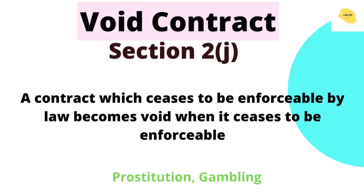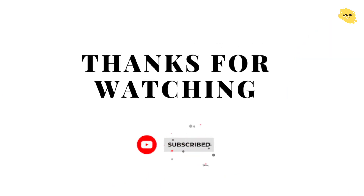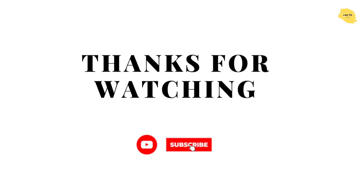Now here is void contract, Section 2(j). A contract which ceases to be enforceable by law becomes void when it ceases to be enforced. For example, prostitution and gambling — all these are void contracts. Thank you guys for watching this video. Do like, comment, and share this video. Stay tuned and see you soon.